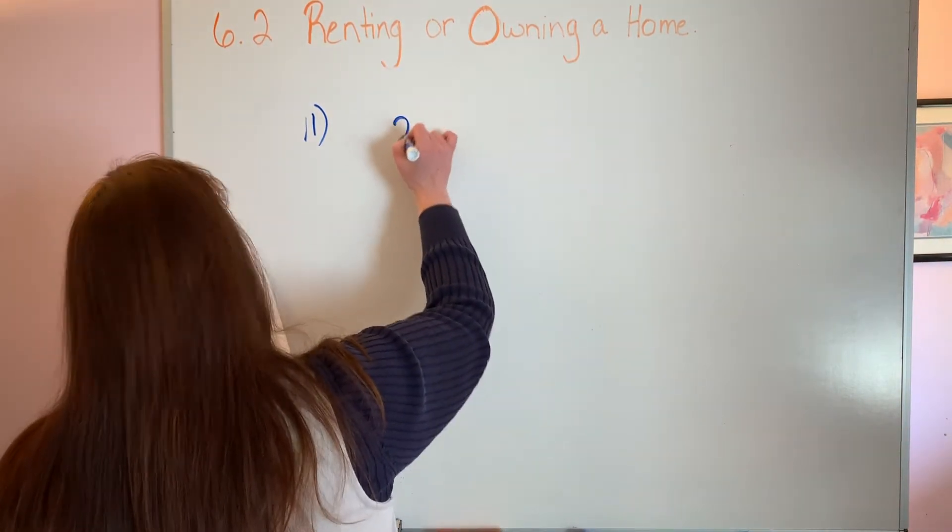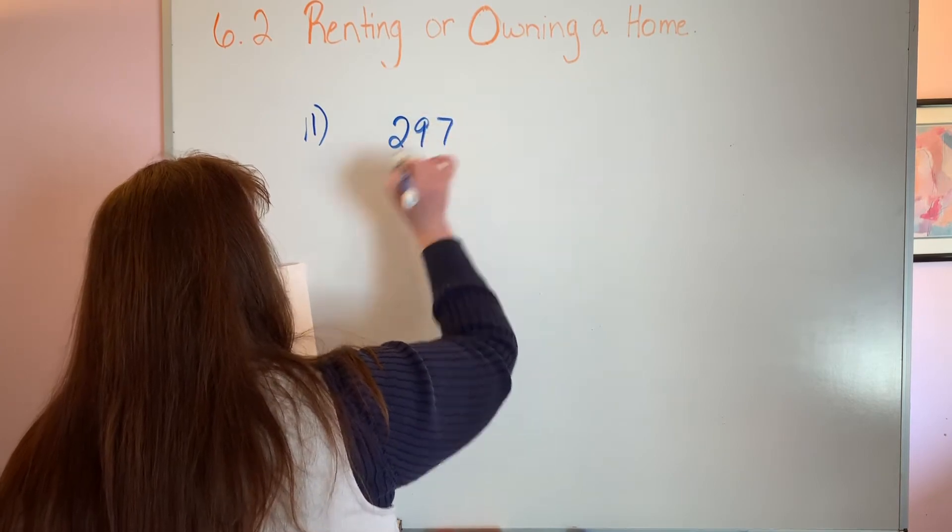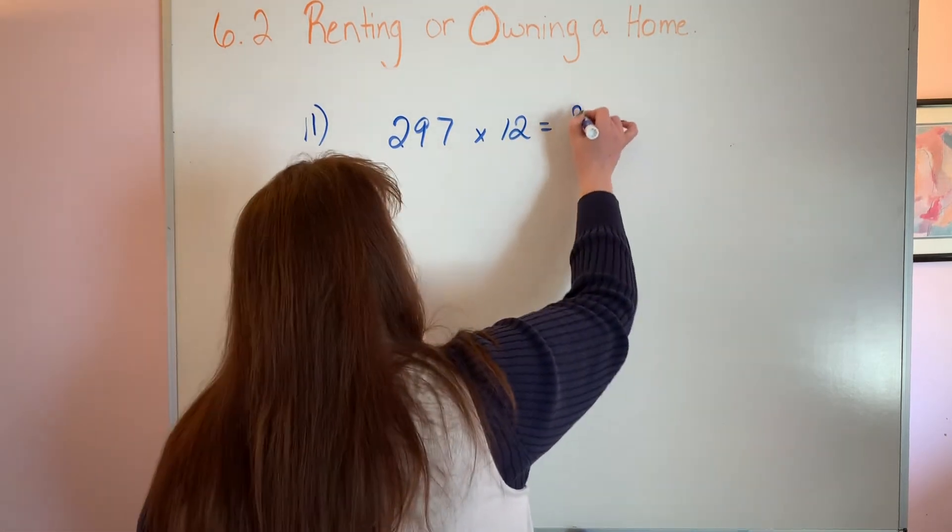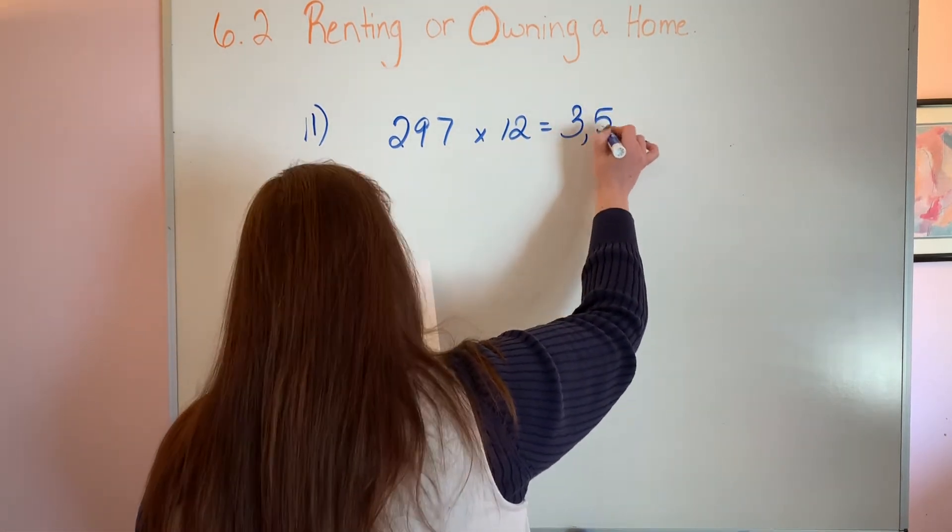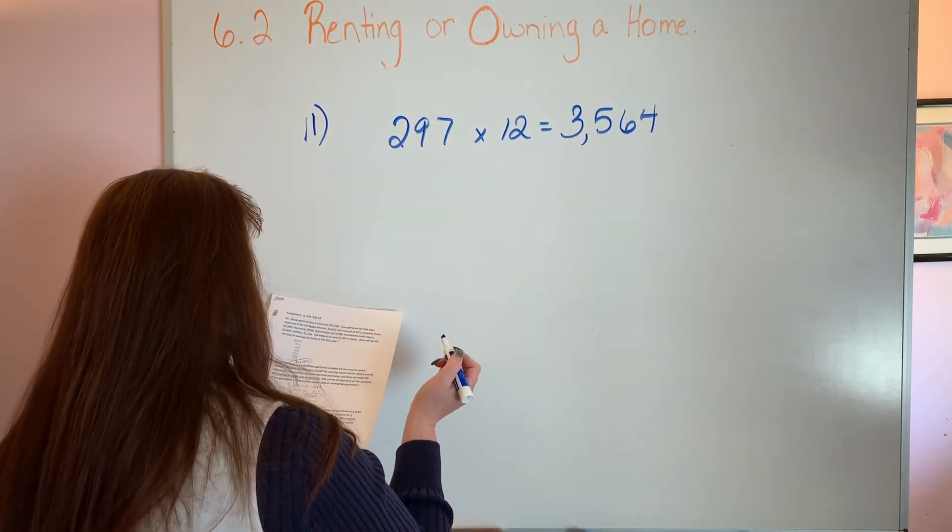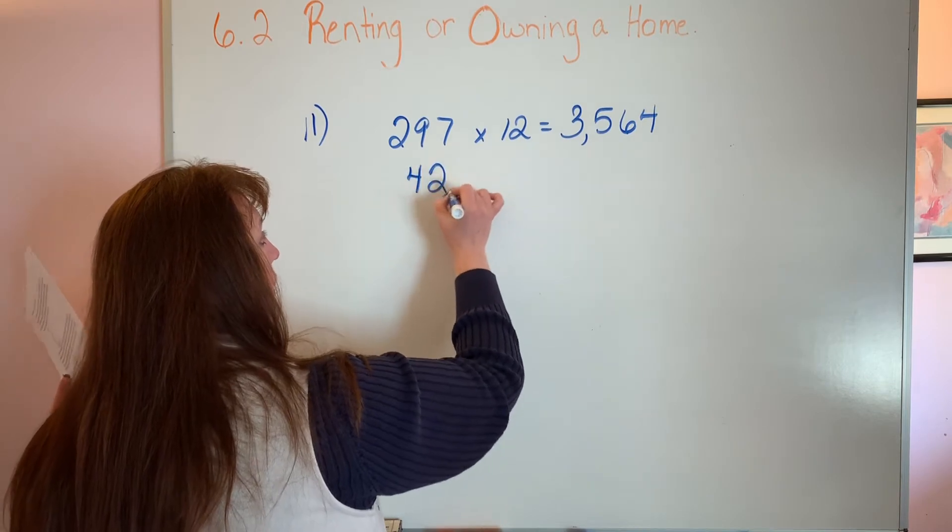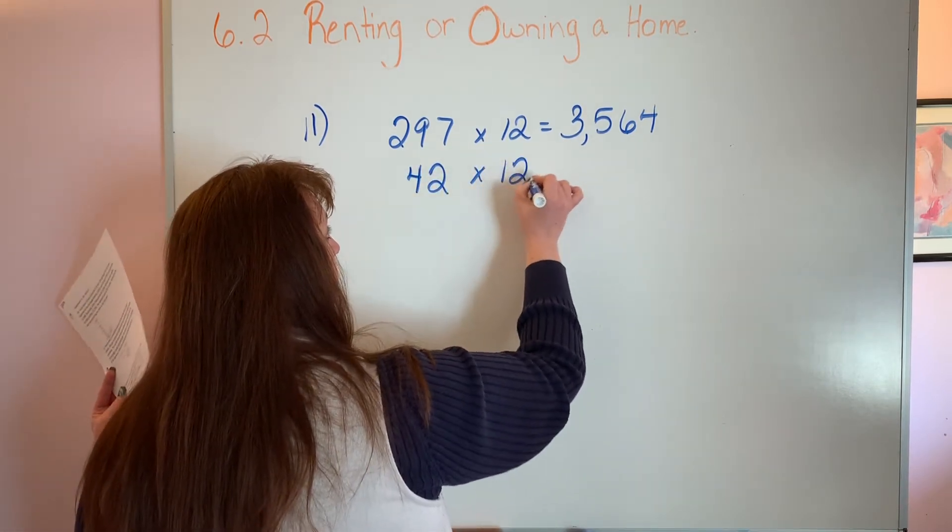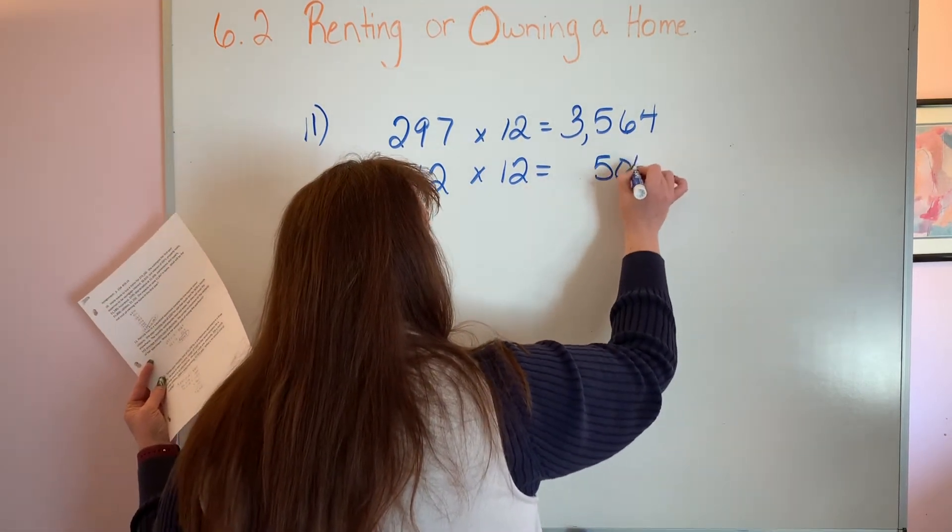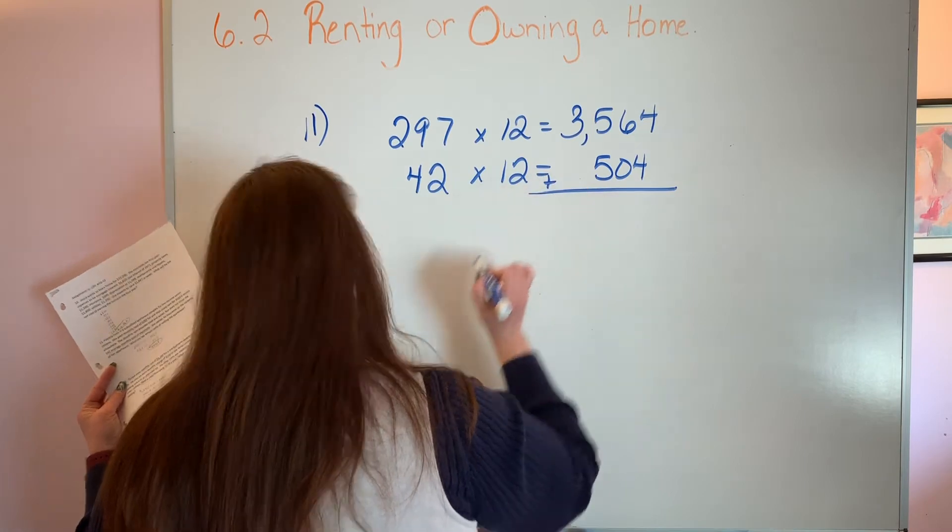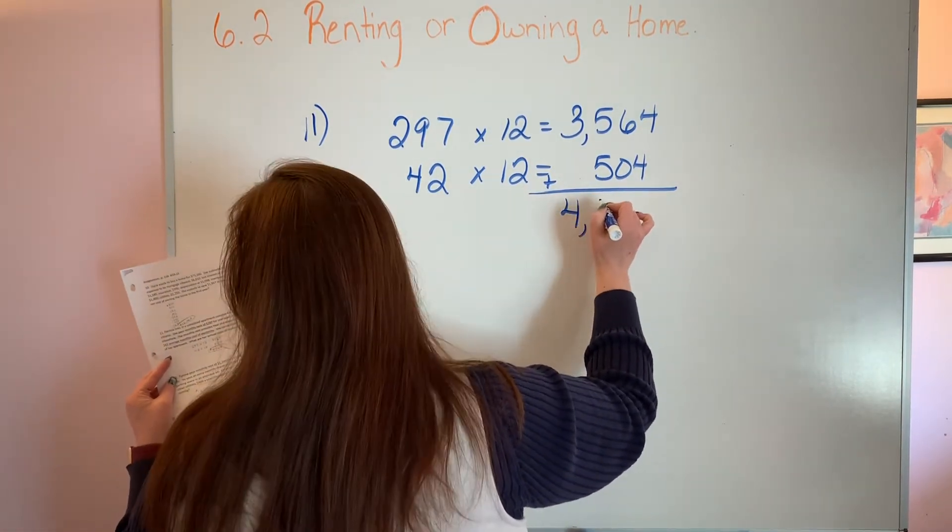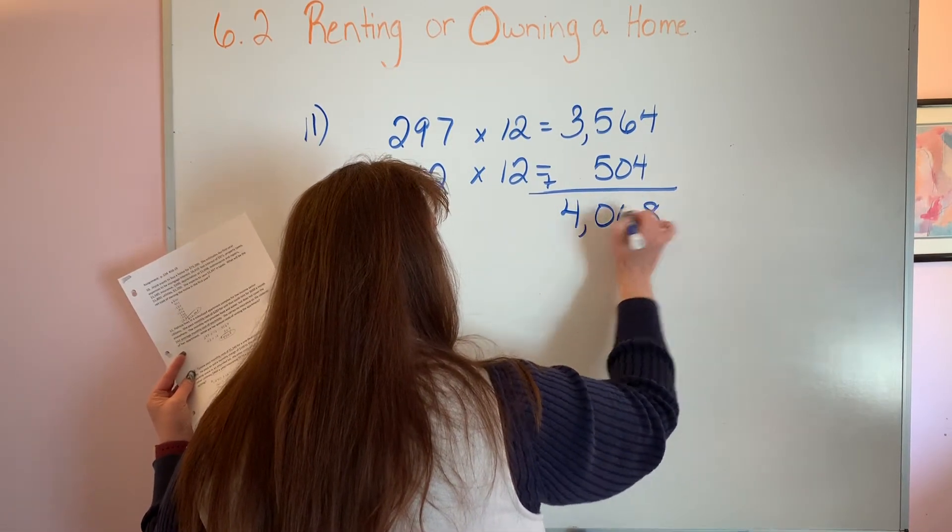We're going to take $297, that's how much she pays a month, times it by 12, because there's 12 months in a year, gives us a total of $3,564. She also has to pay her electricity, that's $42 a month, so 42 times 12, you get $504. Add that together and figure out how much she spends a year, $4,068 a year.